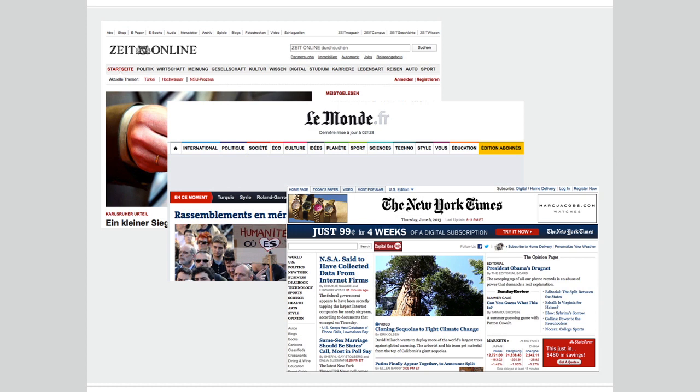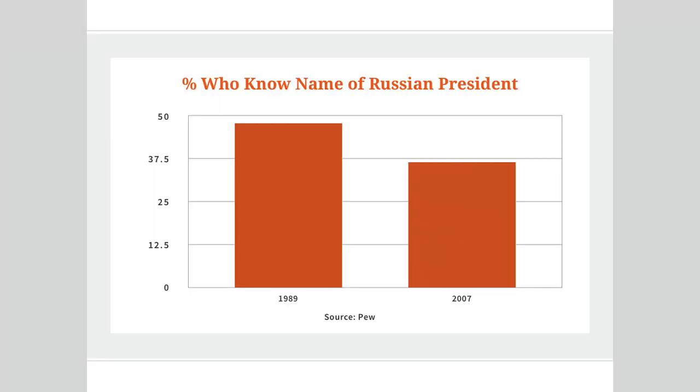Pew did a big study of the differences in people's informedness about foreign affairs before and after the Internet. They looked at 1989 and 2007, and they found that on many metrics, people actually dropped in terms of their knowledge of foreign affairs. That's really weird because right now it's as easy to go to De Zeit or Le Monde as it is to go to the New York Times. There's no barrier to entry here. Yet the percentage of Americans who know the name of the Russian president has actually dropped by like 10 percentage points.